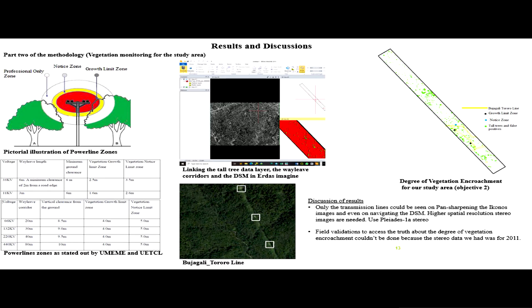Just below it, there is a road. That road has distribution lines, but you can't see them. On the Jinja-Tororo line, I identified some trees at the growth limit zone and some at the notice limit zone. That is objective two of monitoring the degree of vegetation encroachment.